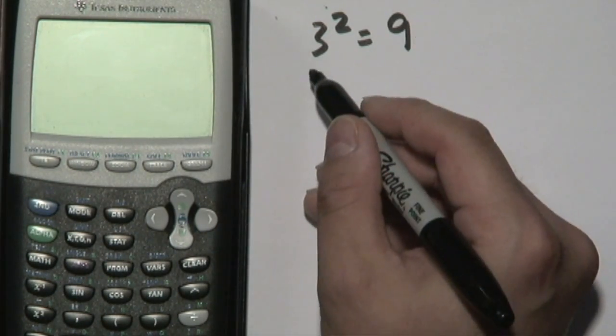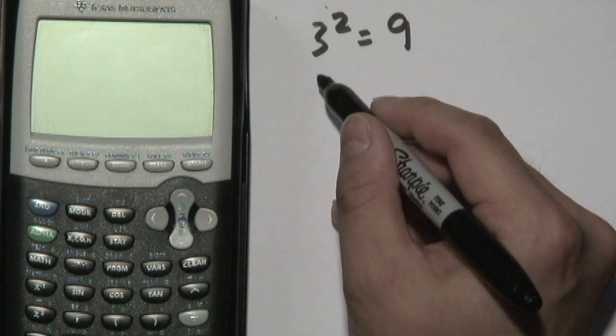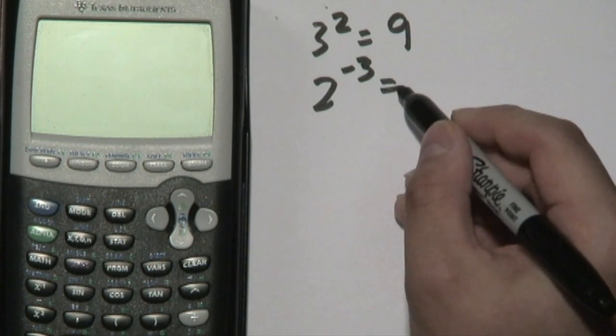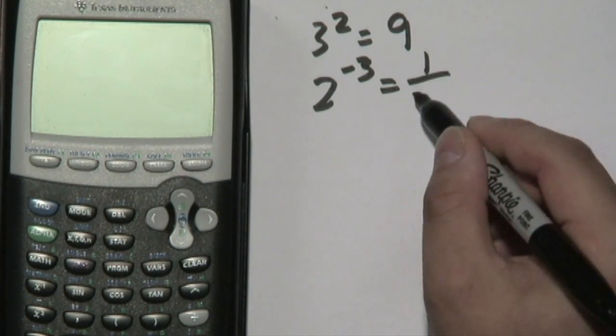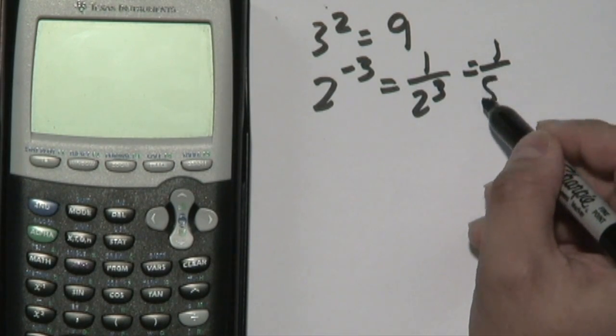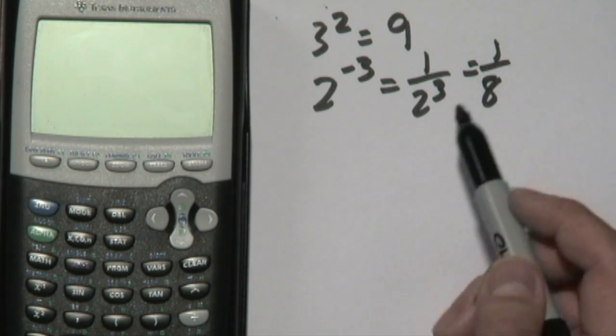Or even if you have a negative integer, for example, if you have two to the negative three, using the negative exponent rule, you could rewrite it as one over two to the positive three, and you know that's going to be one and eight at the bottom. So two to the negative three is one-eighth.